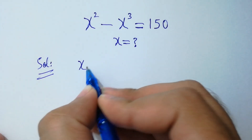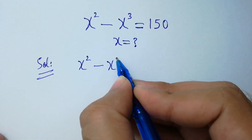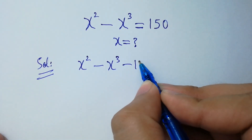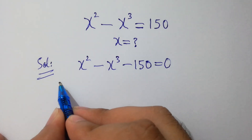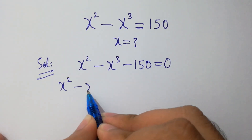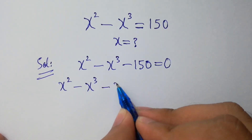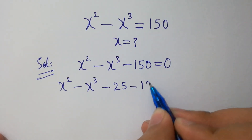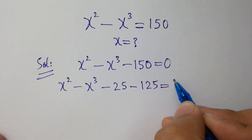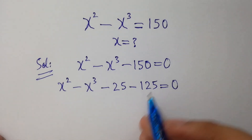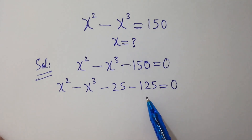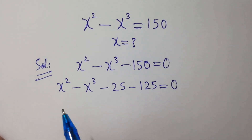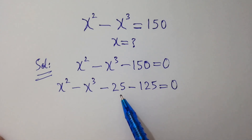We rewrite as x squared minus x cubed minus 150 equals 0. Here we split 150 as 25 plus 125, because 25 and 125 sum to 150. The second reason is x squared pairs with 25, which is 5 squared.